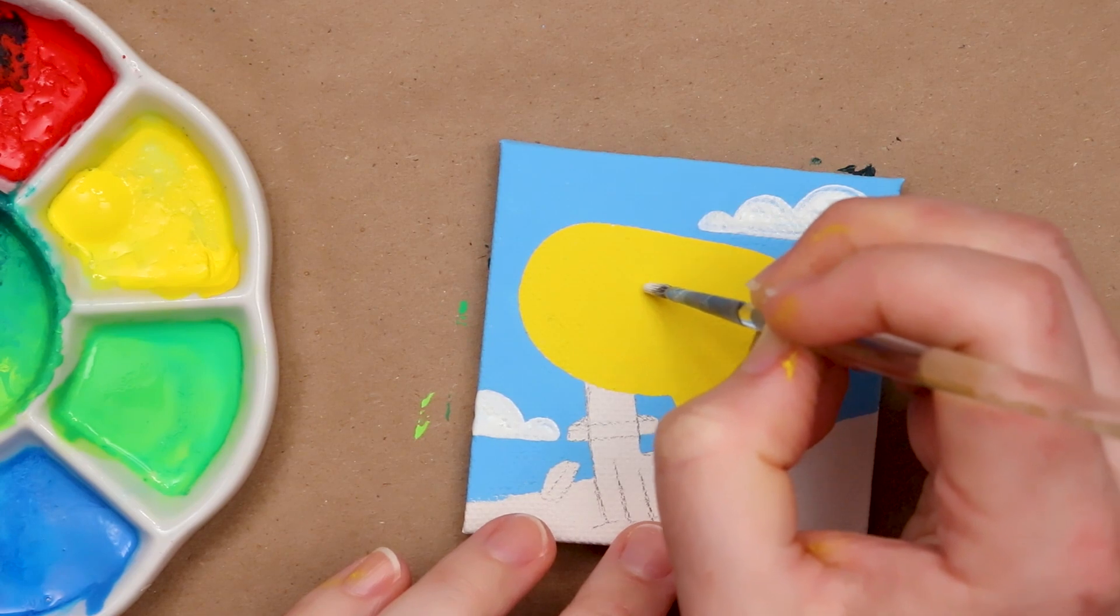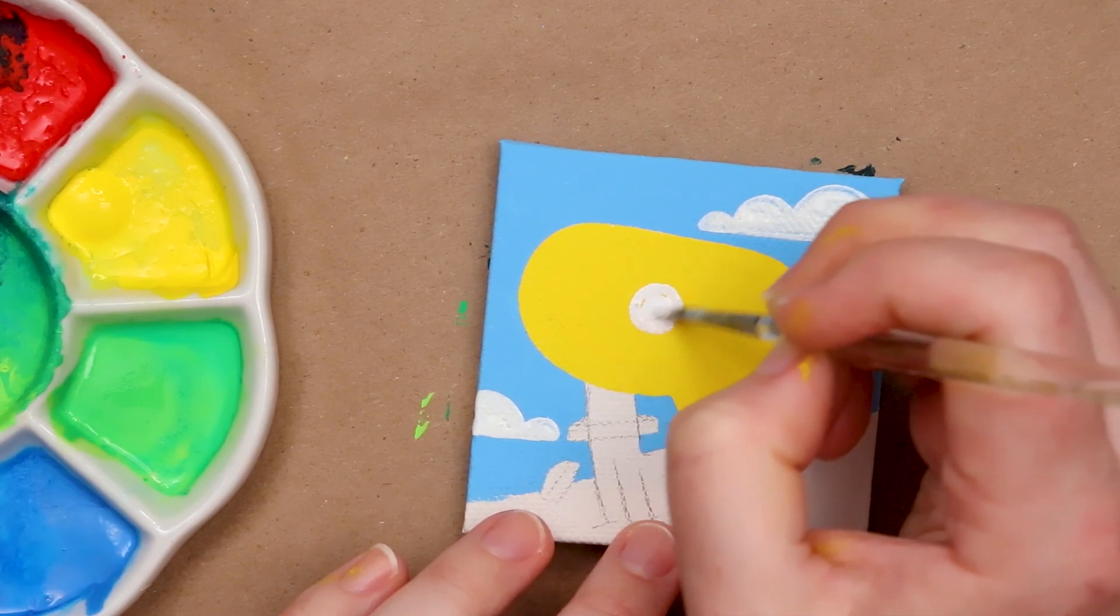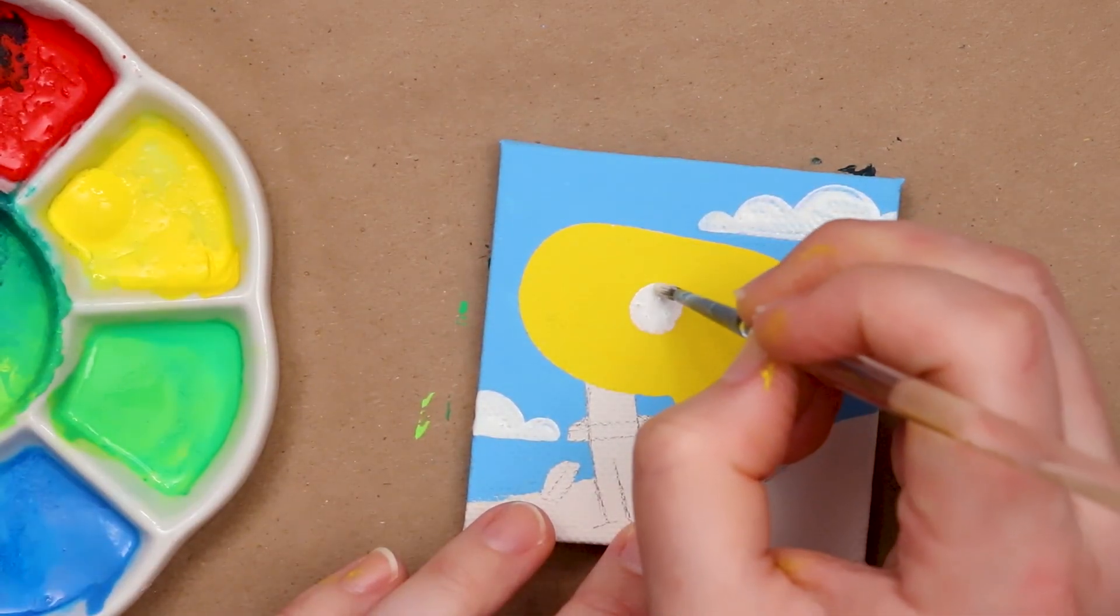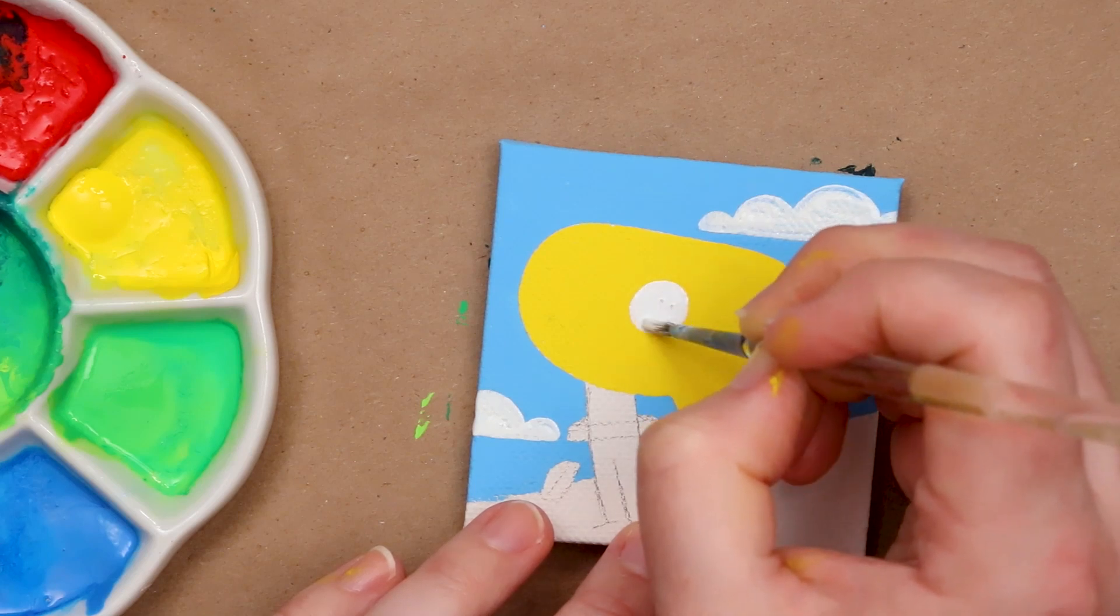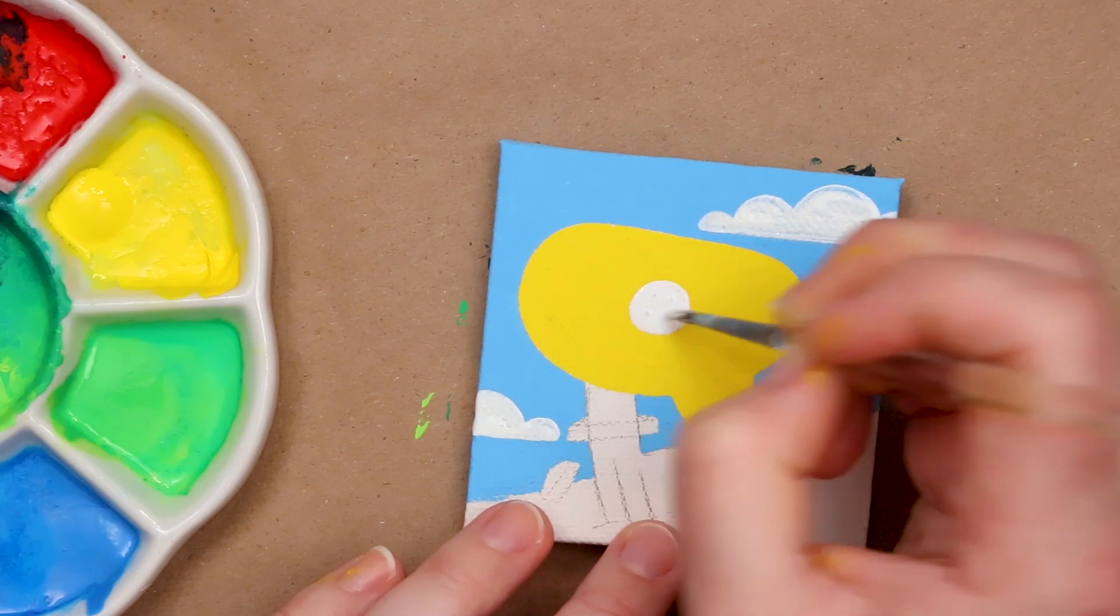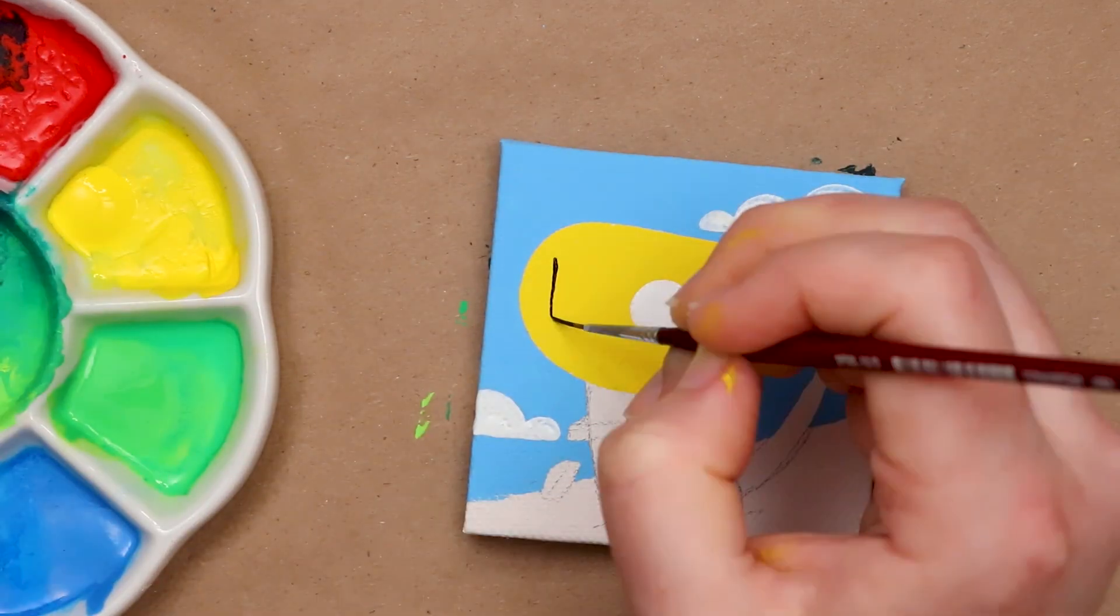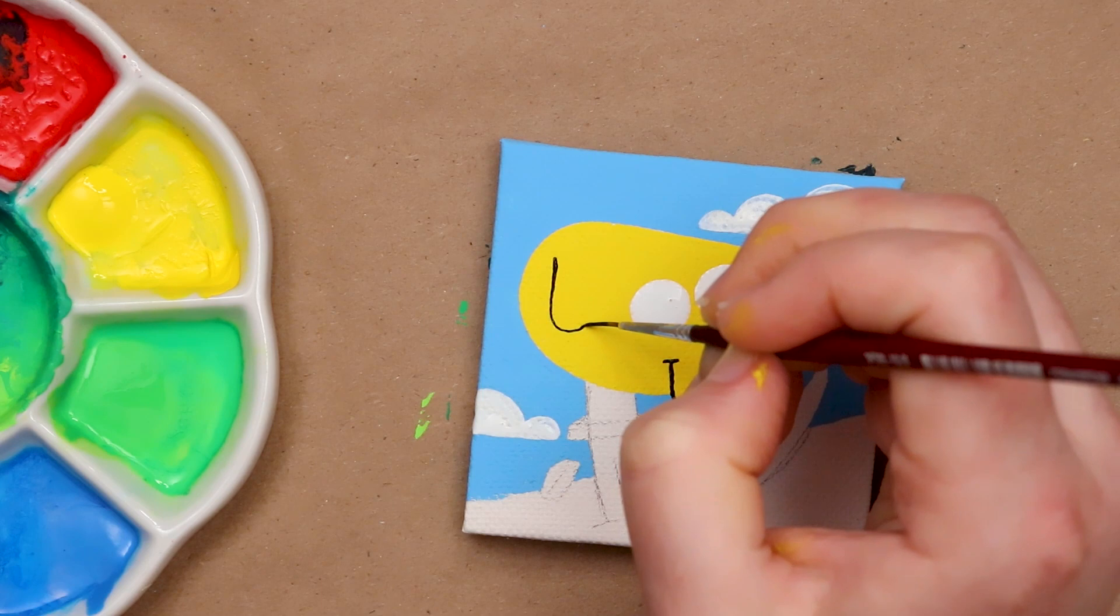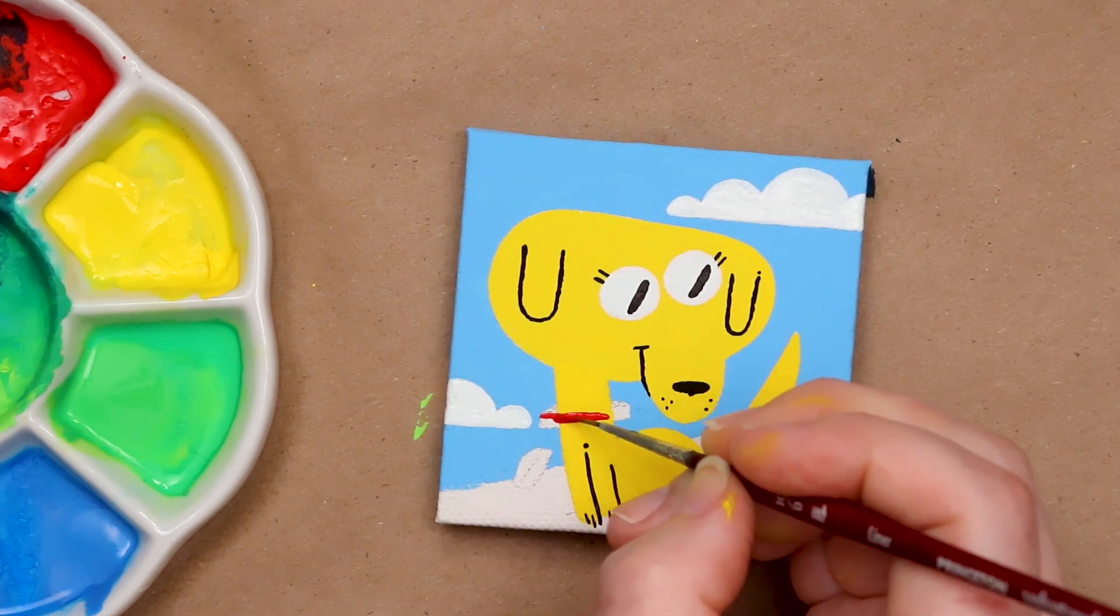While I wait for the first layer of the clouds to dry, I'm going to go ahead and start adding the face to our dog so y'all can see exactly what I'm talking about when I say this looks like a dog. Because you're probably thinking, this absolutely does not look like a dog. You know what? You're right. It doesn't. But we're gonna make it look like a dog. Our little doggy mouth and our little doggy ears.